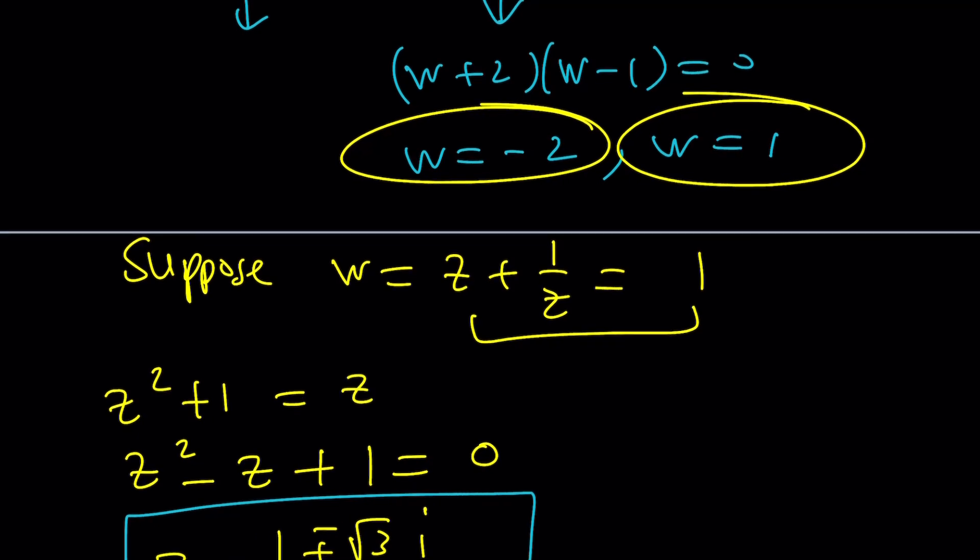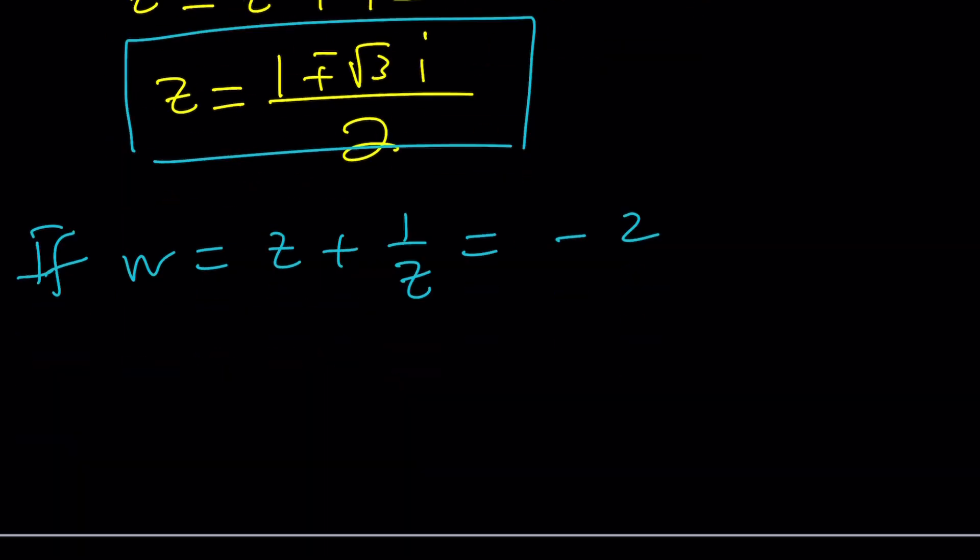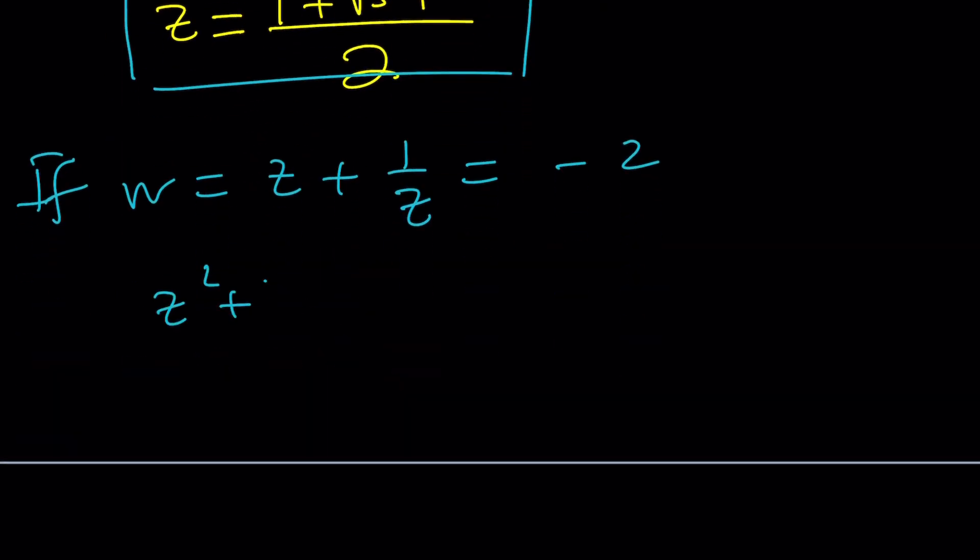But what happens if w is equal to something else, like negative 2. Let's find out. If w is equal to negative 2, let's just say w, which is z plus 1 over z. Maybe you just put a little if there. Is equal to negative 2. Then z squared plus 1 is equal to negative 2z. z squared plus 2z plus 1 is equal to 0. I hope you recognize this. This is a perfect square. So from here, z equals negative 1.